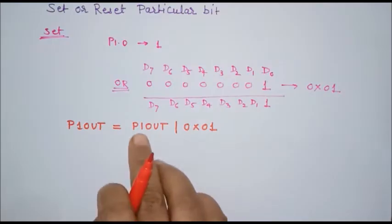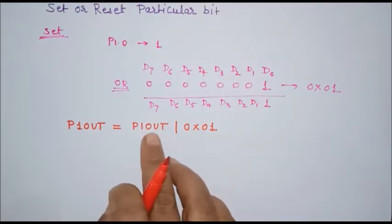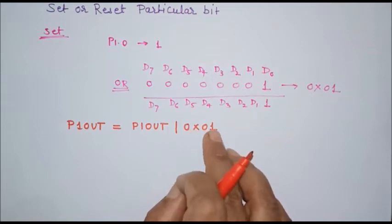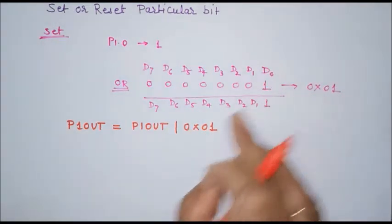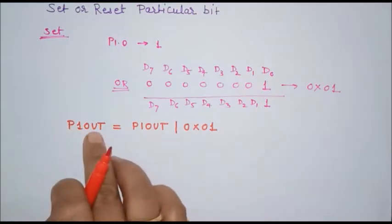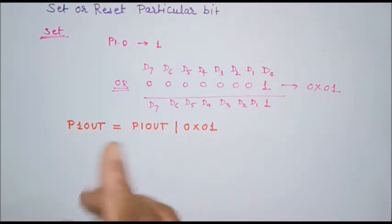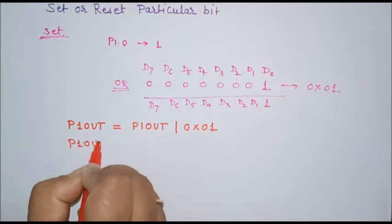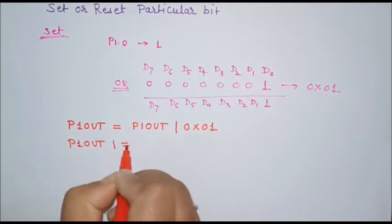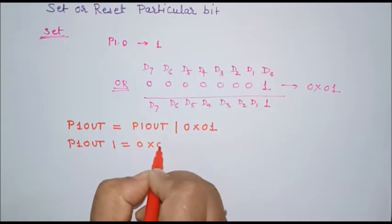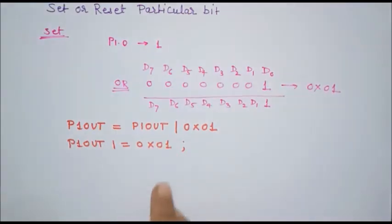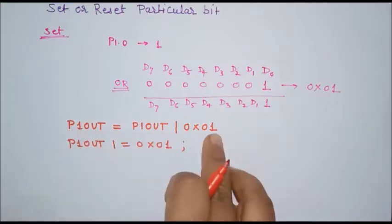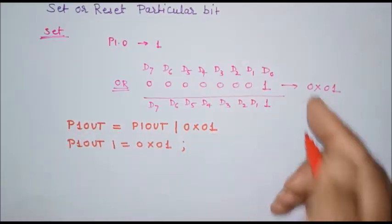Whatever data is available on the p1out register, we are going to OR it with 0x01 because we want to set this bit, and the result will be stored in the p1out register. In short, we can write: p1out |= 0x01; — that is C language syntax.